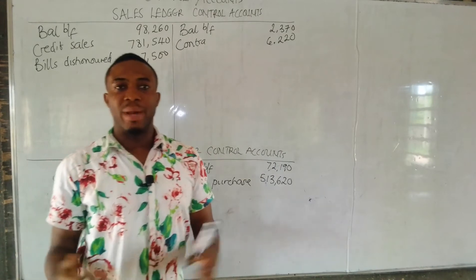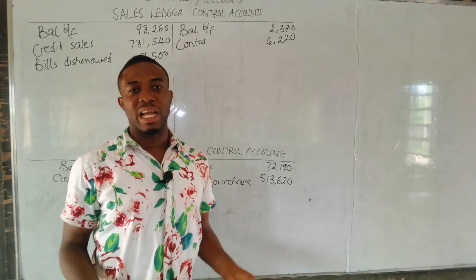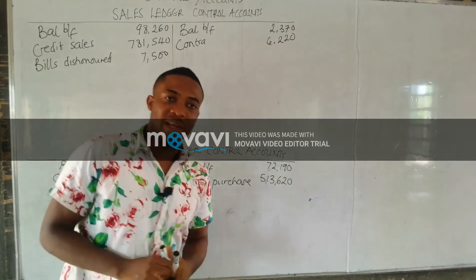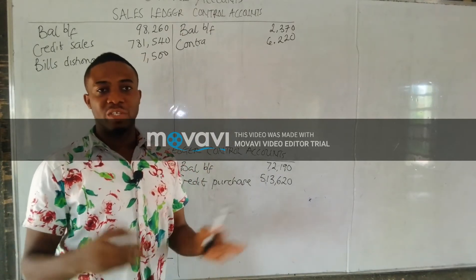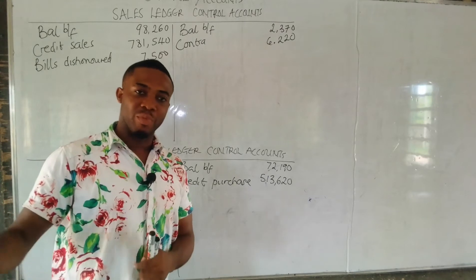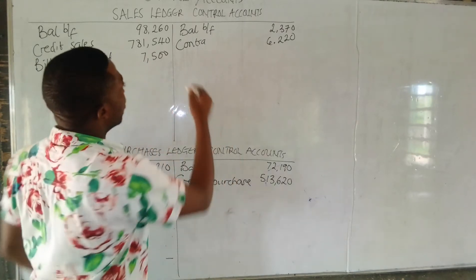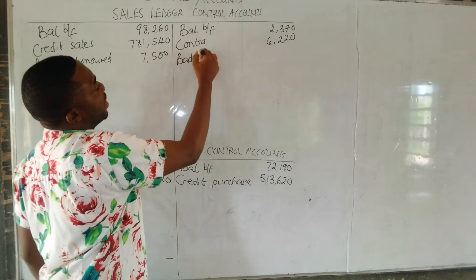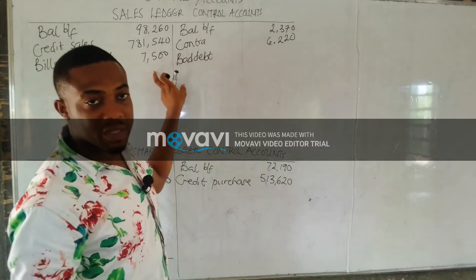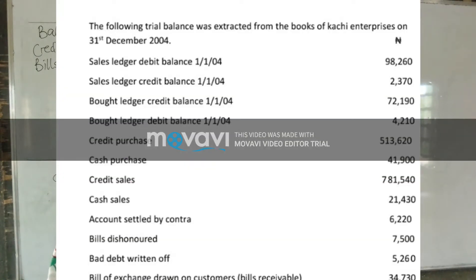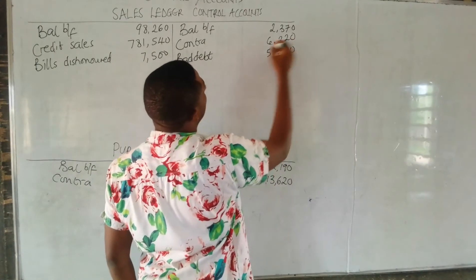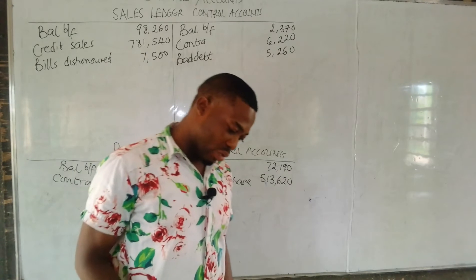Next is bad debts written off. Bad debts are irrecoverable debts — those that cannot be recovered. Since they cannot be recovered, they are written off, which reduces the existing debt recorded in the seller's books. Therefore, bad debts written off are posted to the credit side of the sales ledger. The amount for bad debts written off is $5,260.